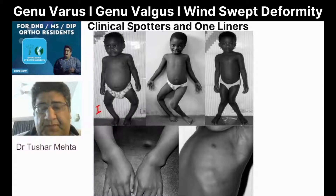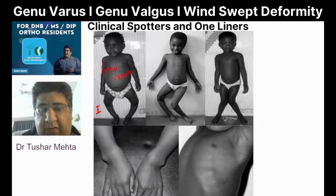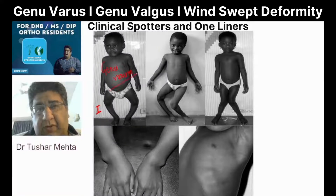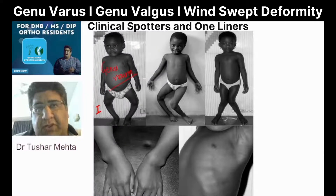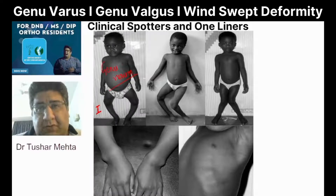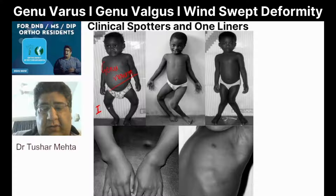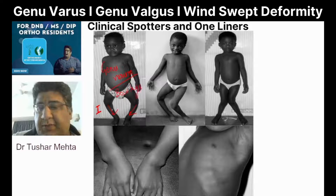Genu varum. Whenever we use the word genu varum, it's not that the genu or the knee will go into varus. It is always the part distal to genu — that is the tibia, the leg, the fibula — they go towards midline. So we call it genu varum. By the way, this is also called bow legs.